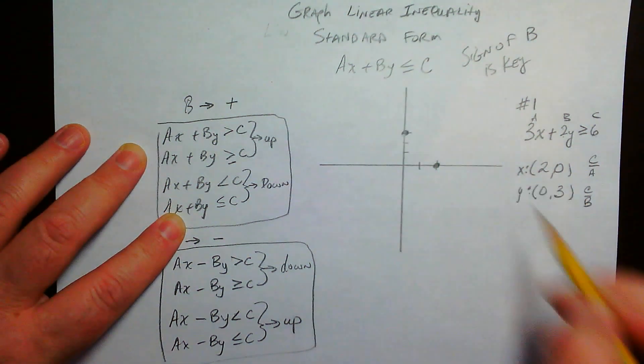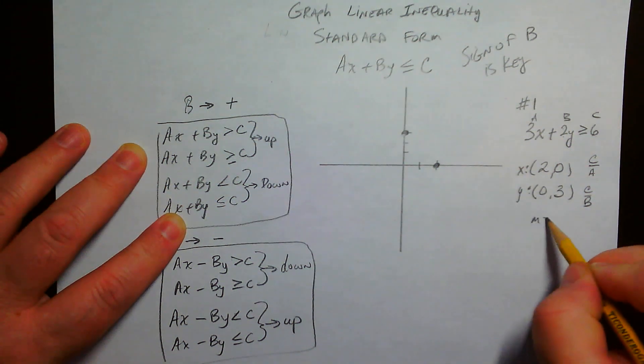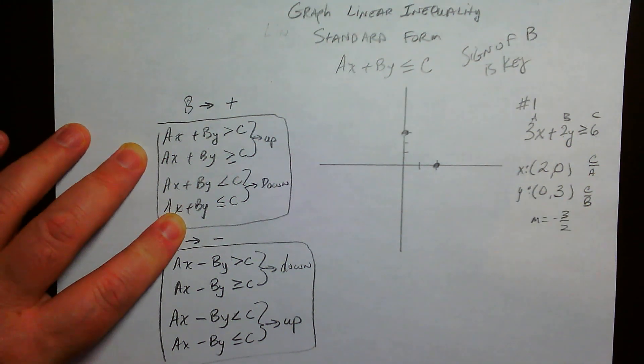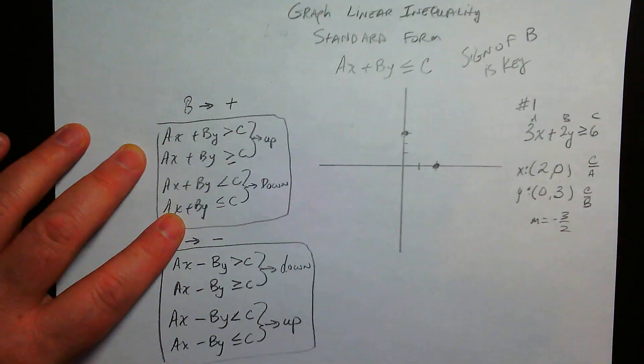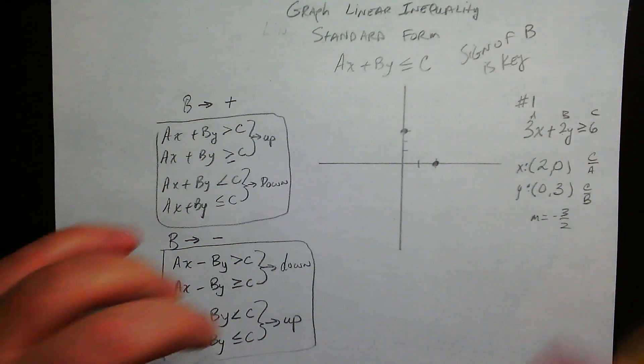Looks like the slope is negative 3 halves. We don't really need to know that right now, but there we have it. So now, this is where it's a little different. If it's a linear equation, you just connect those dots and you're done.